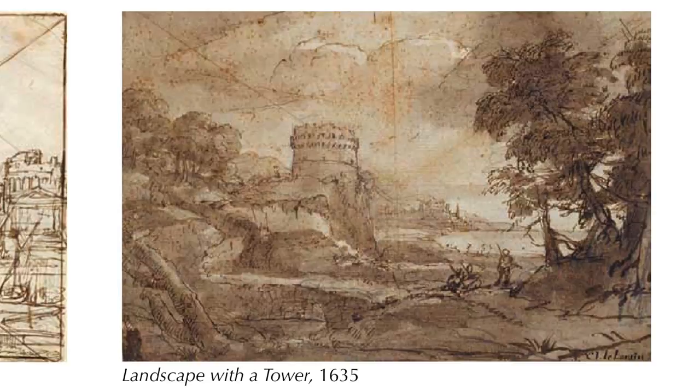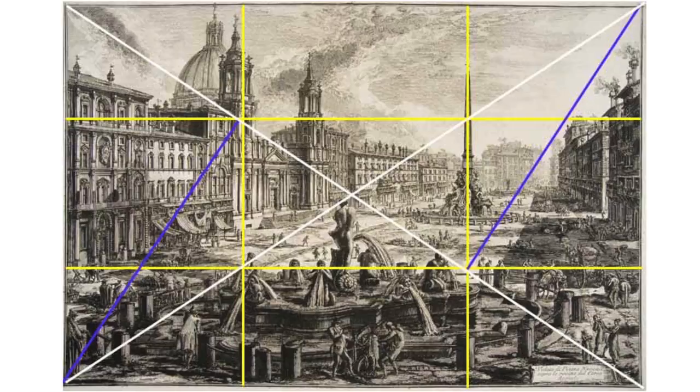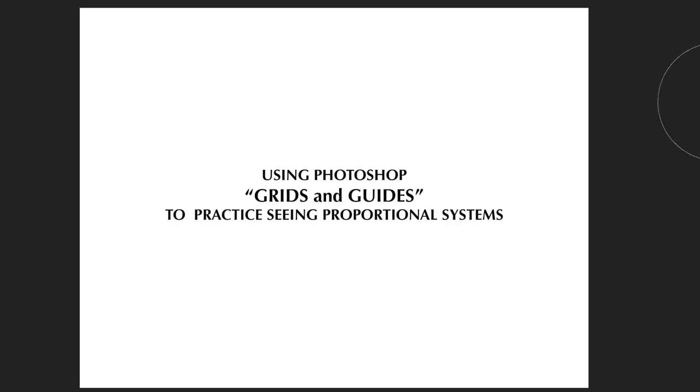Hey everybody, it's Steven Brook and welcome to my YouTube channel on architectural photography and composition. Proportional systems have been around for hundreds and hundreds of years and they've been used by great masters for paintings, engravings, and murals. They're extremely important for us in architectural photography, and Photoshop has something that will help you develop your eye for proportional systems that you can use out in the field. So let's look at Photoshop's grids and guides and see how they can help us practice seeing proportional systems.